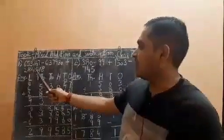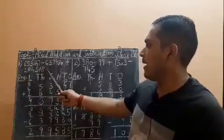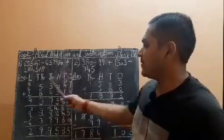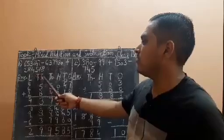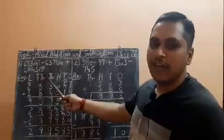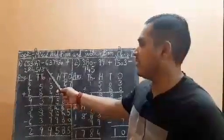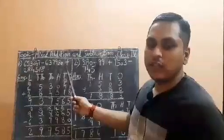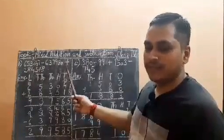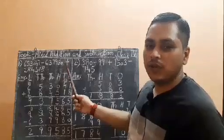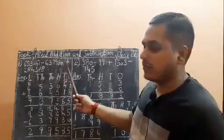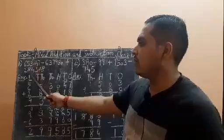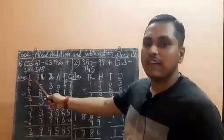The question is 6,53,047 minus 6,37,980 plus 2,84,518. Here two mathematical operations are given: minus and plus. According to the DMAS rule, you will first add the two numbers, that is 6,53,047 plus 2,84,518.